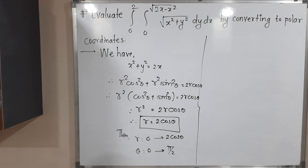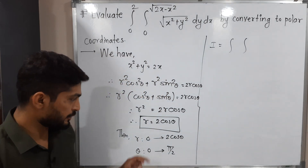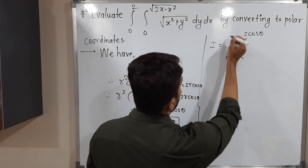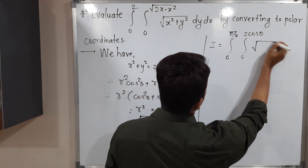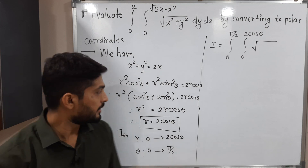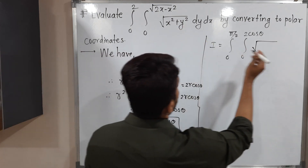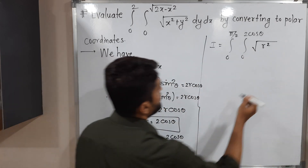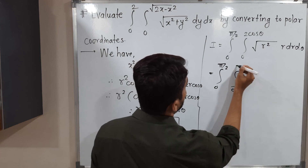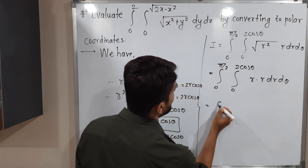So I is equal to the double integral with inner limits of r from 0 to 2cosθ and outer limits of θ from 0 to π/2. The integrand is √(x² + y²), and since x² + y² = r², we have √(r²) = r. With dx dy replaced by r dr dθ, the integral becomes ∫₀^(π/2) ∫₀^(2cosθ) r · r dr dθ.